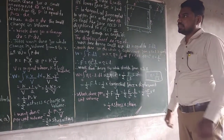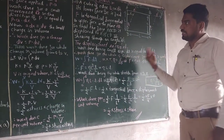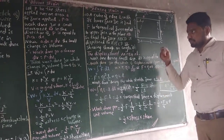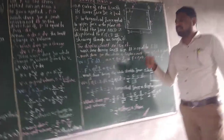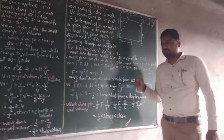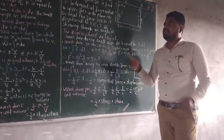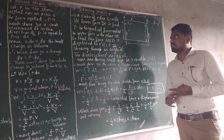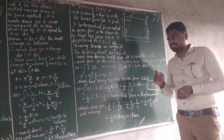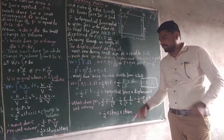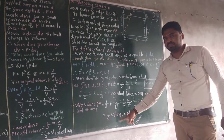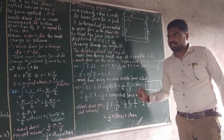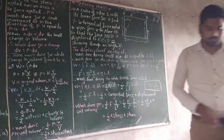By seeing these three derivations, the work done per unit volume in case of volume strain, longitudinal strain, and shear strain is the same — that is, (1/2)·stress·strain.